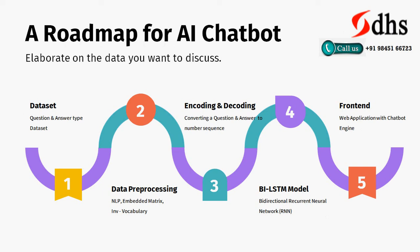A roadmap for the AI chatbot: there are mainly five processes in building it, plus a sixth for integration with the website. The first step is the dataset — a question and answer type dataset. We prepared it with all possible customer questions and possible answers. From the dataset, using NLP, we do data pre-processing: removing special characters, removing stop words, and extracting main keywords. Based on the keywords, we create an embedded matrix and a vocabulary list. From the vocabulary list, we create the inverted vocabulary, where each word is assigned an ID. One process converts a question from keyword to ID, and the other converts the ID back to a word for the answer.